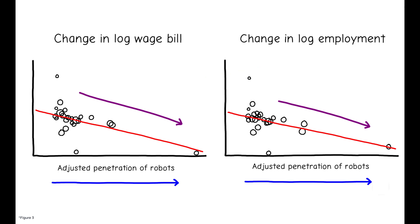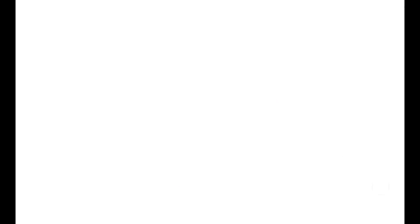Given these patterns, this paper's main question is, what are the implications for local labor markets? Put another way, what has happened to workers in markets heavily affected by robot adoption?